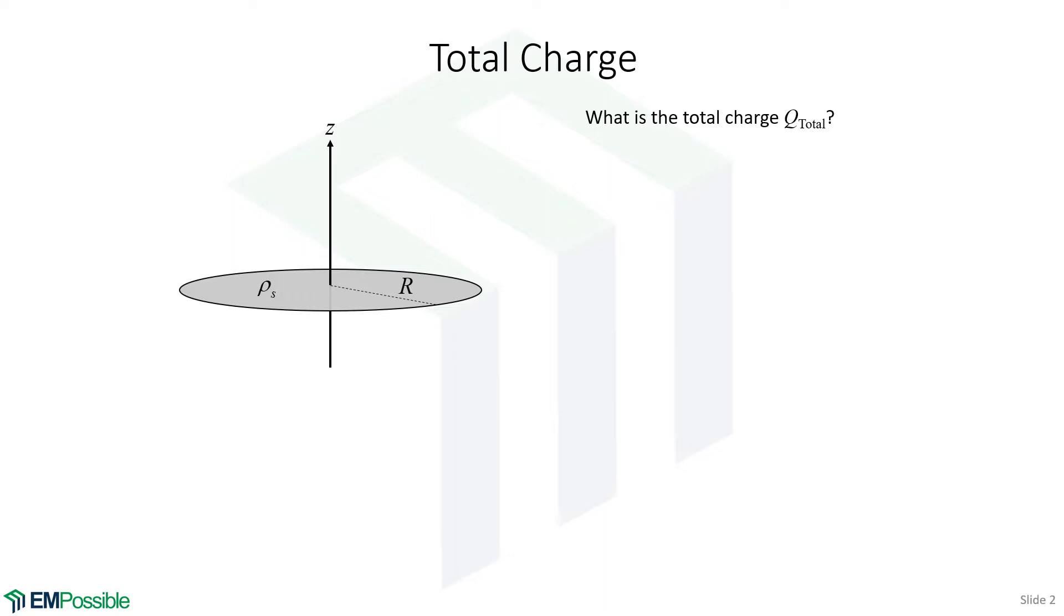We're going to follow the recipe that we laid out in the notes. Step one, draw the problem. Well, we've already done that. Step two, choose a coordinate system. Well, how about cylindrical? It looks much more like a cylinder than it does a sphere or anything rectangular-ish or Cartesian-ish. So I think cylindrical coordinates is how we'll proceed.